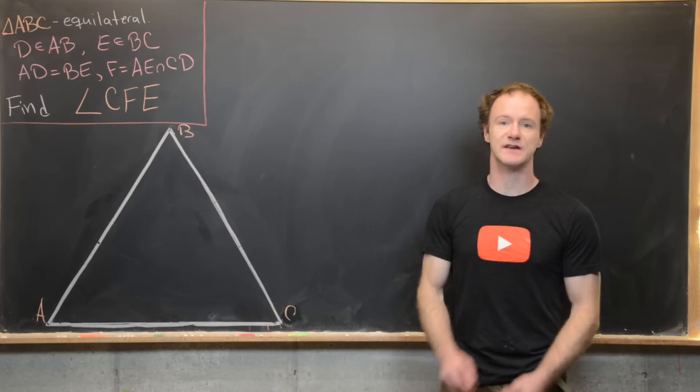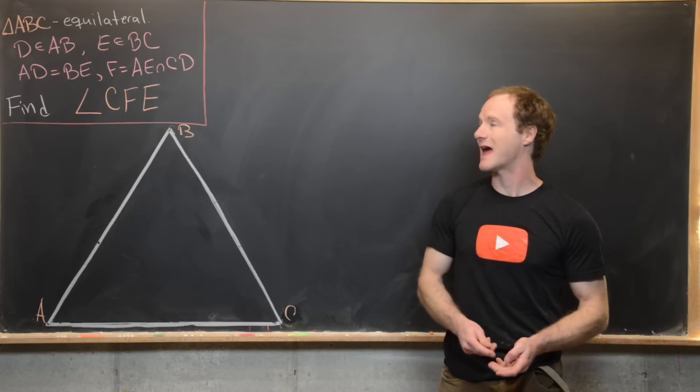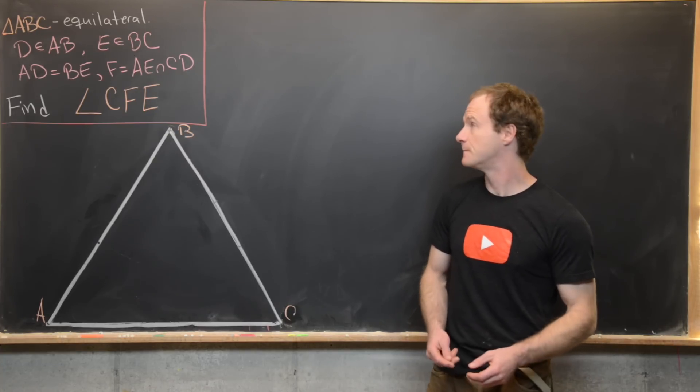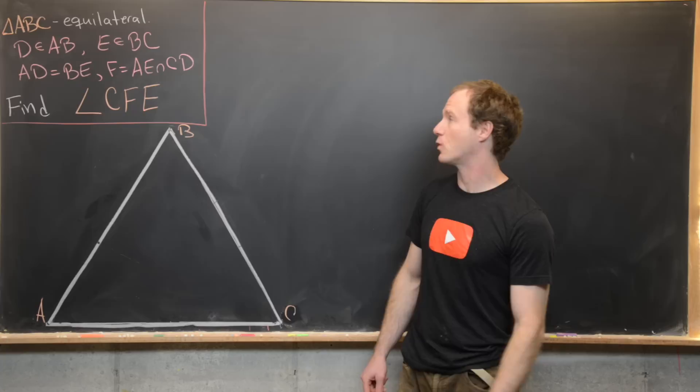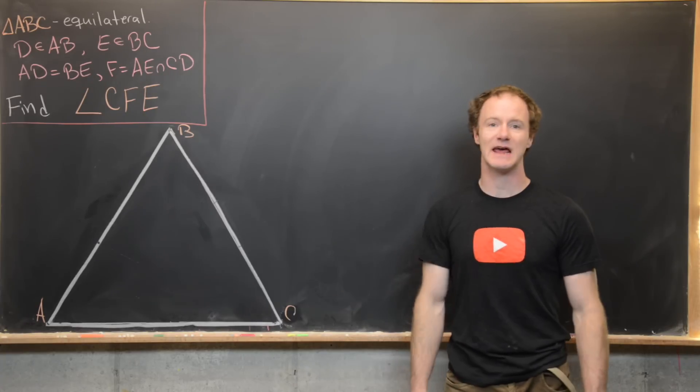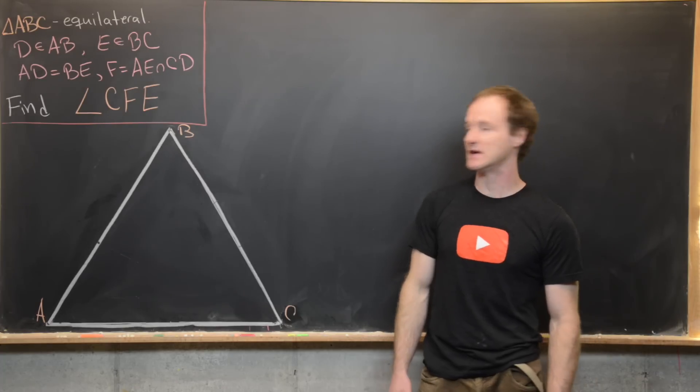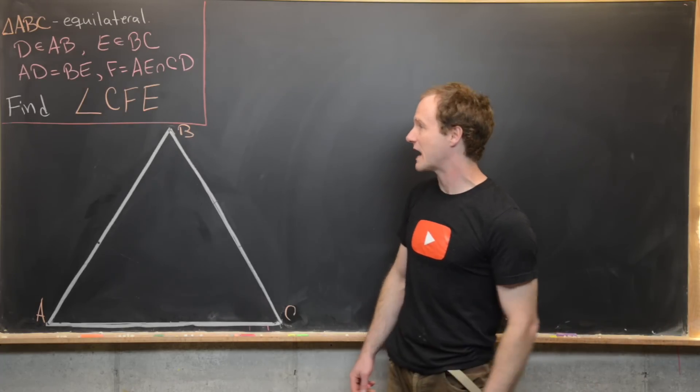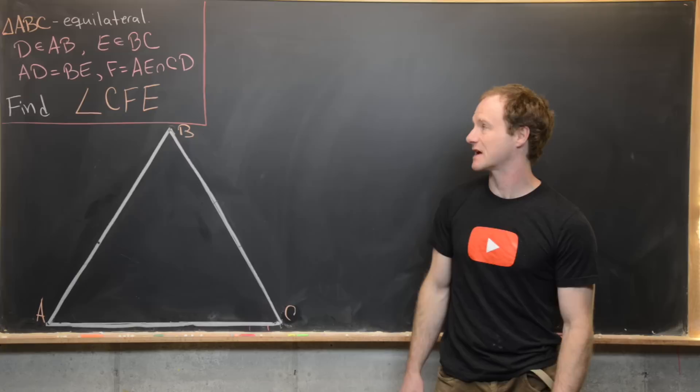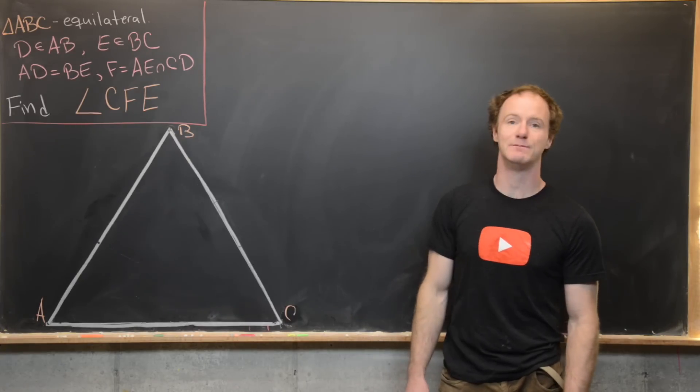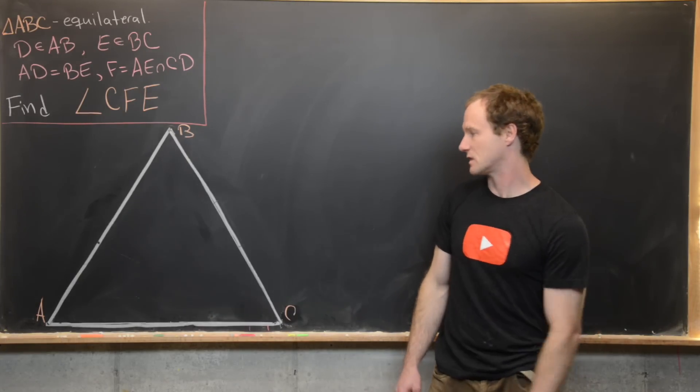So our setup goes like this: We've got an equilateral triangle A, B, C. And then next we have a point D on the line segment AB and a point E on the line segment BC, and they are arranged in a way so that the line segment AD and the line segment BE are the same length.